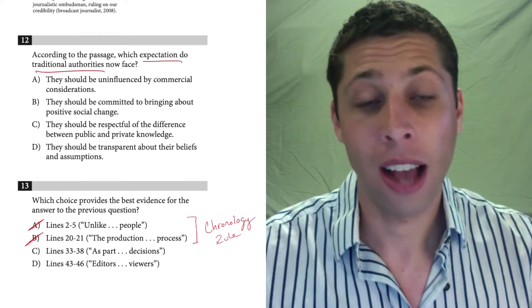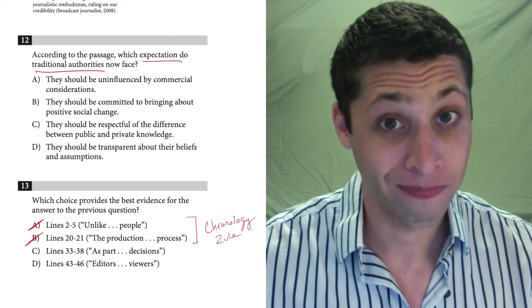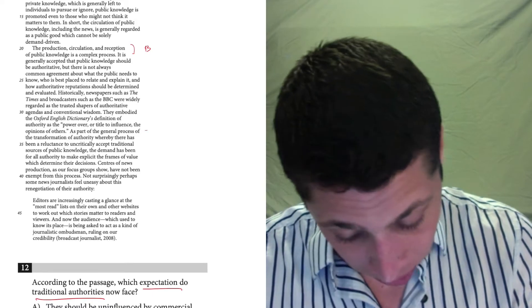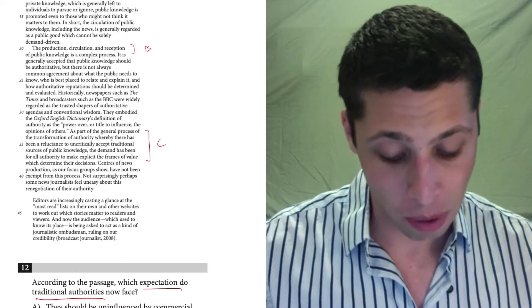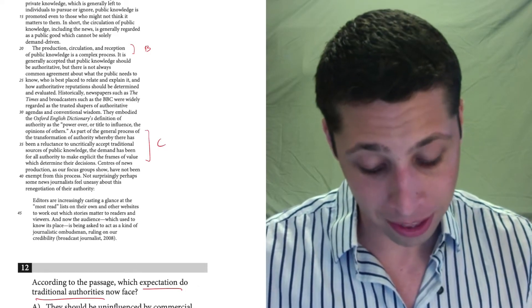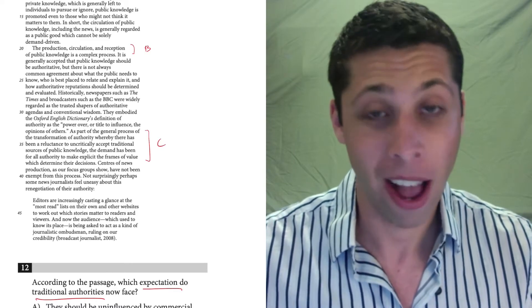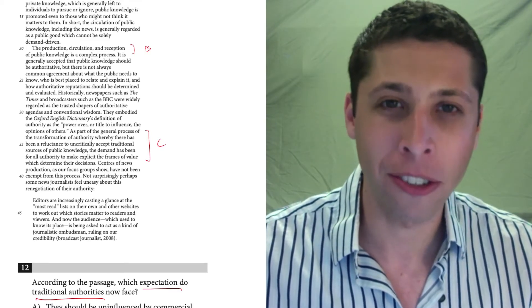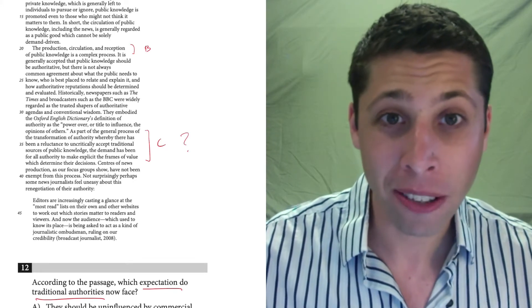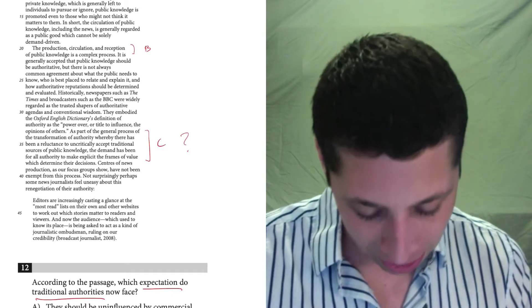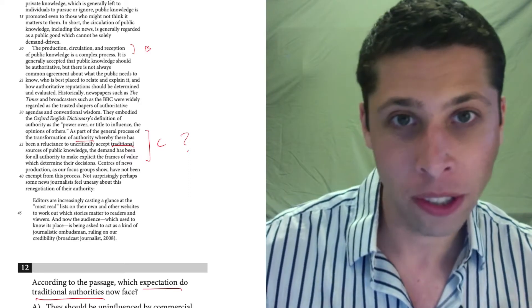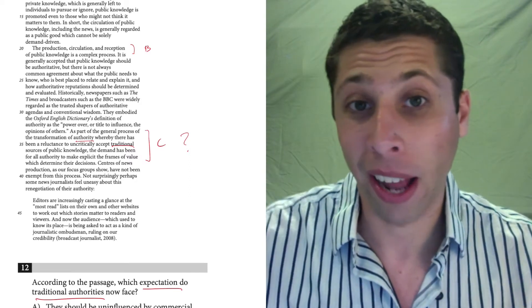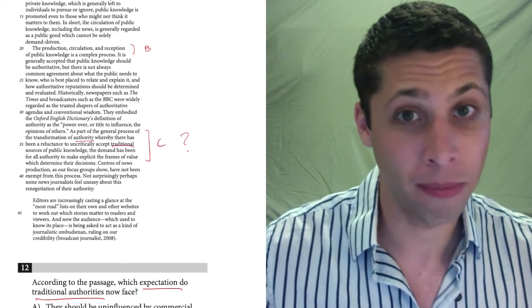So now I'm like, okay, well, it is what it is. I've got to look at these other ones and see if I can find a good match for this question. Let's look at C, 33 to 38. This one's tough. As part of the general process of the transformation of authority, whereby there has been a reluctance to uncritically accept traditional sources of public knowledge, the demand has been for all authority to make explicit the frames of value which determine their decisions. I have no idea what I just read. And that's okay. My job here is not to really understand everything. I would not reread this. I would just be like, yep, it makes no sense. But there were some key words that did make a little sense. I saw the word authority. I saw the word traditional somewhere. There it is. So I would keep choice C in the mix because I don't understand it, but I understand it enough to be like, okay, it seems relevant. That's okay. Our job at this point is just to eliminate things that are totally wrong and keep around what seems to make some sense.